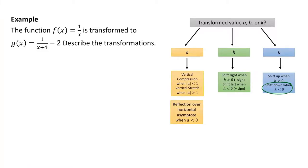Let's look at an example. The function f of x equals 1 over x is transformed to g of x equals 1 over x plus 4 minus 2. Let's describe the transformations. When we describe the transformations, we want to think about the values of a, h, and k.